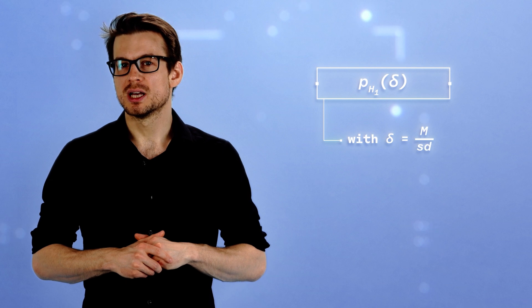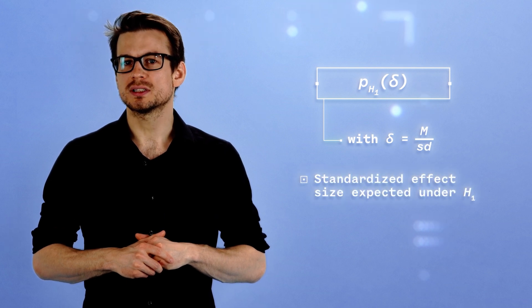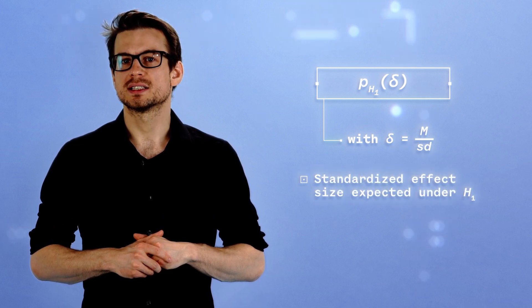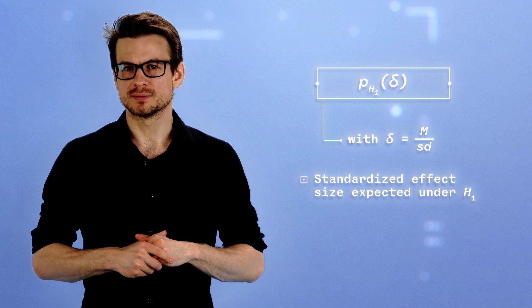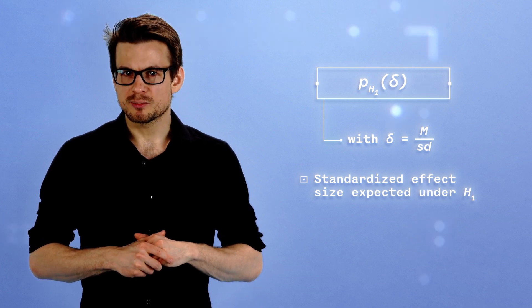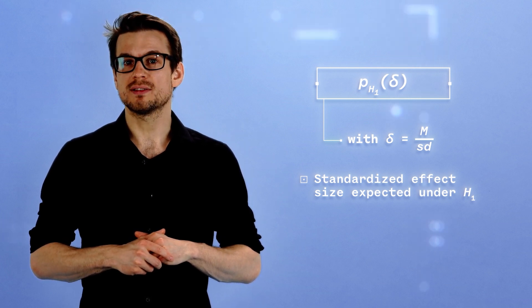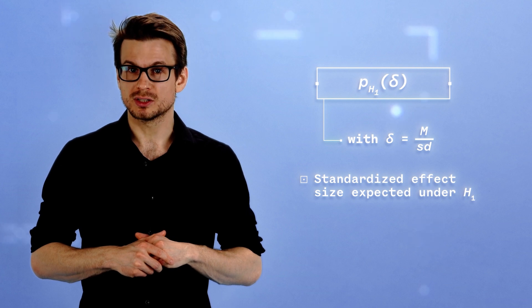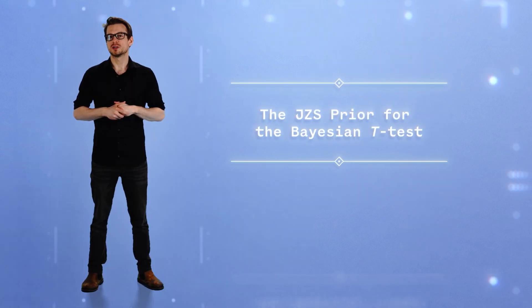The approach for the Bayesian one-sample t-test presented here proposes a convenient solution that consists in setting a prior on the standardized effect size δ under the alternative hypothesis H1. Simply put, this approach requires you to commit to a range of effect sizes you estimate plausible according to expectations. Both the JASP software and R follow the same approach and propose to set a prior on the standardized effect size under the alternative hypothesis H1. It is called the JZS prior.